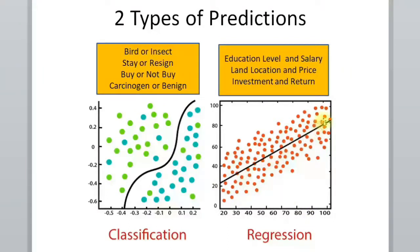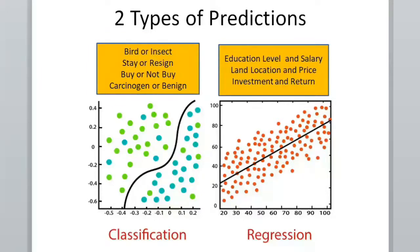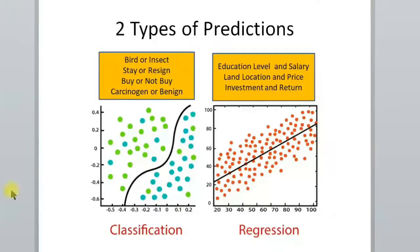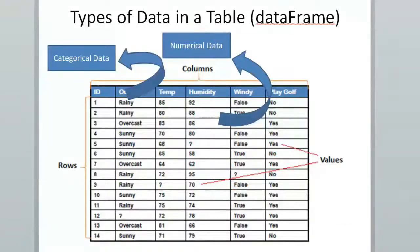In a regression type of problem, you solve things like: given an education level, what would be the salary of an employee? Given a location, what would be the price of land? Given an investment, what would be the return? Those are the types of problems regression solves.